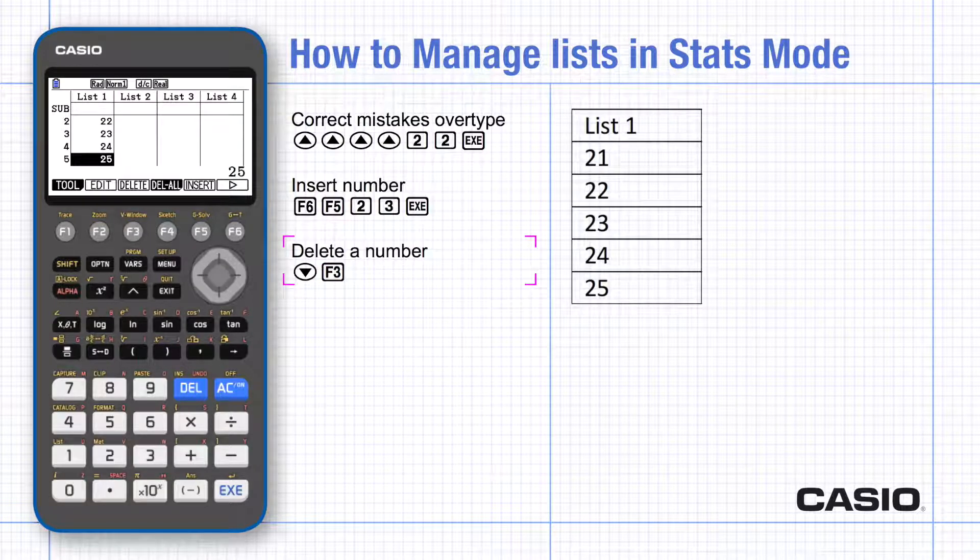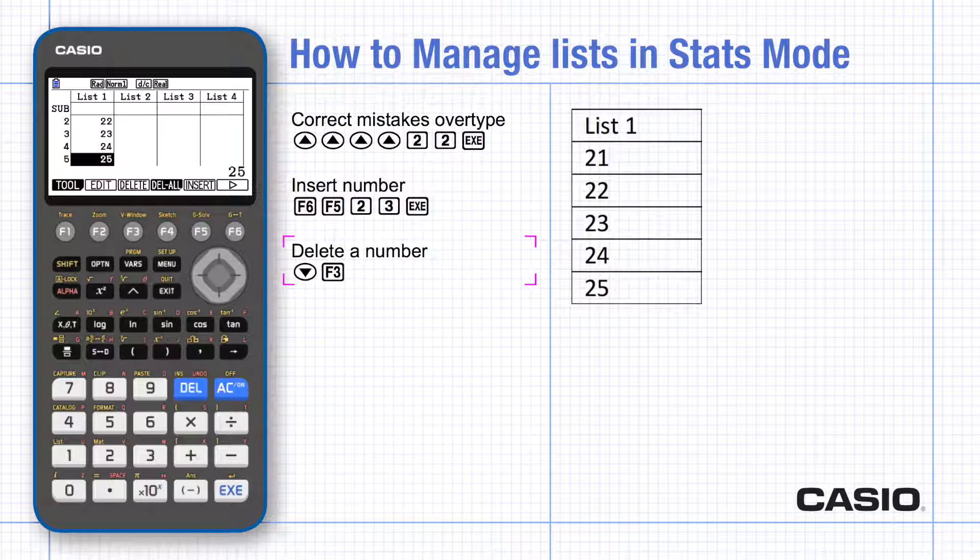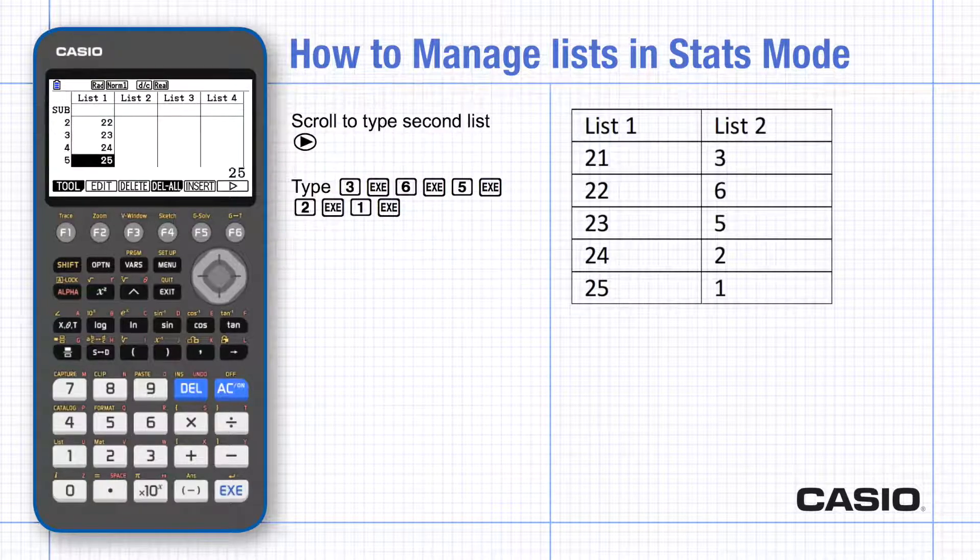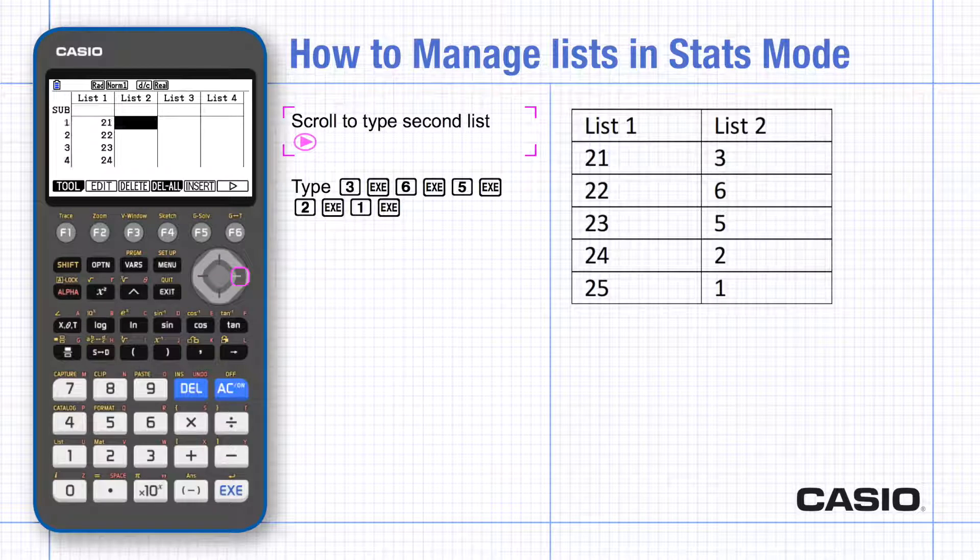Often data comes with frequency or as bivariate data, so two lists of data can be typed in the same way, this time without any mistakes. Scroll to the right and then begin typing from the beginning of the list of frequencies.